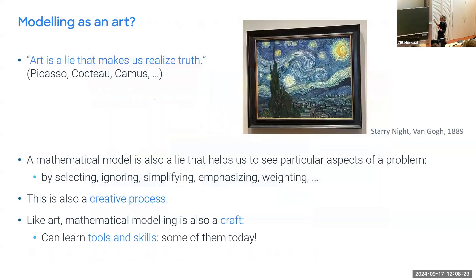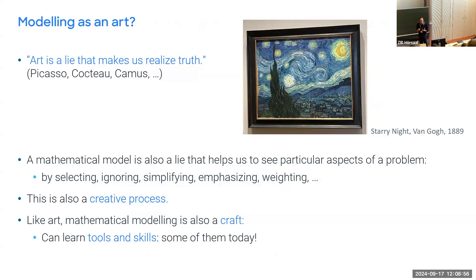So what is modeling? Modeling is often referred to as an art, and that's actually a good analogy. There's a quote attributed to several people: 'Art is a lie that makes us realize truth.' In some sense that's also true about mathematical modeling, because a model is never reality — it's always a lie that helps us see particular aspects of a problem better than if we look at every detail. We select, ignore aspects, simplify, emphasize certain things, and weight the importance of something.